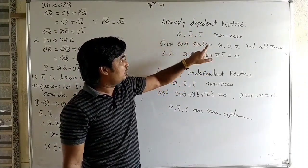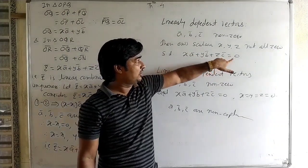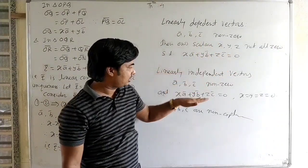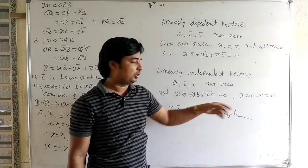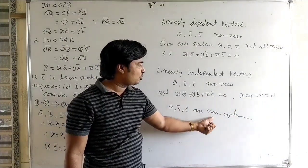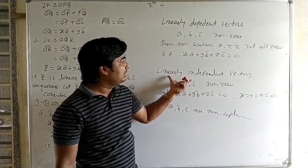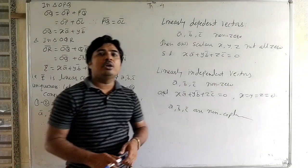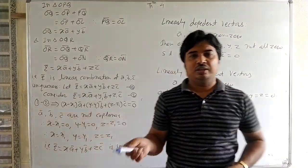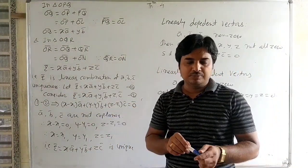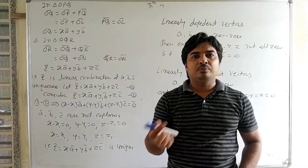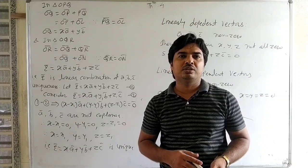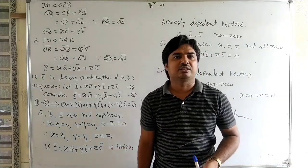To summarize: if a-bar, b-bar, c-bar are nonzero vectors and their linear combination is zero — if scalars are not all zero, it is linearly dependent, meaning coplanar; if scalars are all zero, it is linearly independent, meaning non-coplanar. One vector can be expressed as a linear combination of two vectors, and three vectors will be discussed in the next lecture.